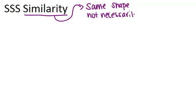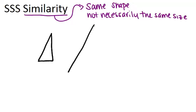So what that will mean is that one shape will look like an enlargement or a reduction of the other shape. The properties of two shapes that are similar are all of their corresponding angles will be congruent and all of their corresponding sides will be proportional.